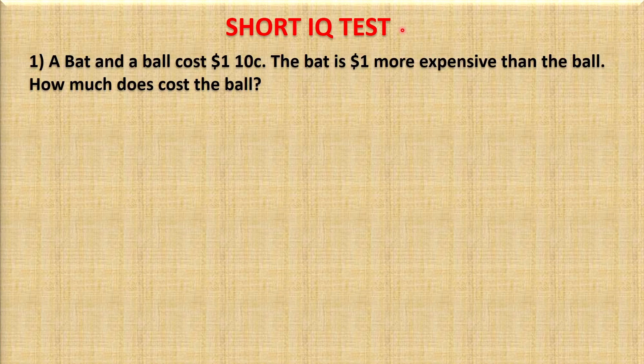The first question: a bat and a bow cost $1.10. The bat is $1 more expensive than the bow. How much does the bow cost?